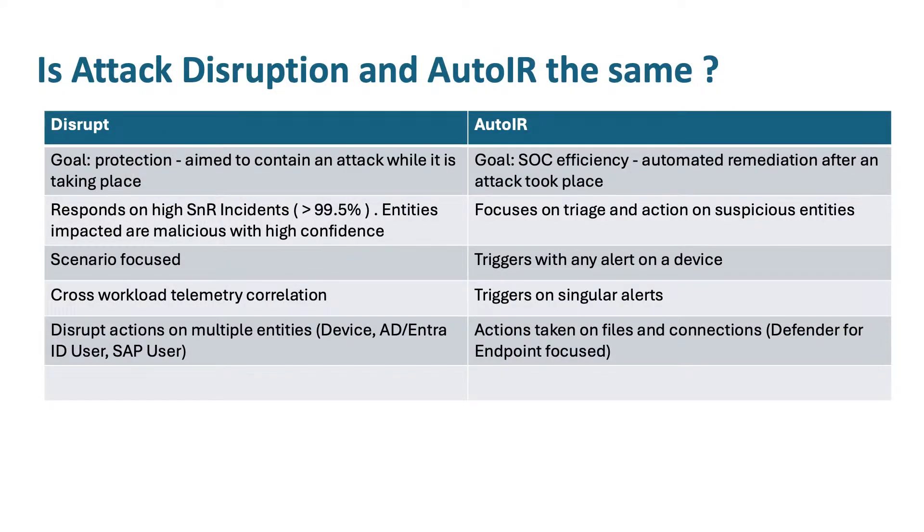Let's say I'm a Defender customer and I want to benefit from these features — what do I need to do? First of all, this feature works on activated E5 licenses, and we also need to have some configurations set up per Defender product in order for it to work. However, attack disruption does not have an on/off switch in the portal. It is enabled for all tenants that have an E5 license, and you need to make sure each Defender workload is configured accordingly so that it will efficiently trigger an attack disruption scenario and take a response action.